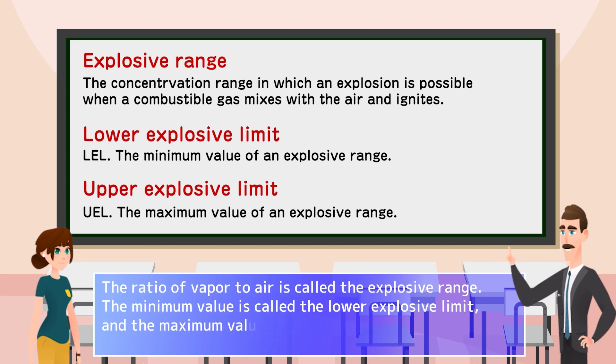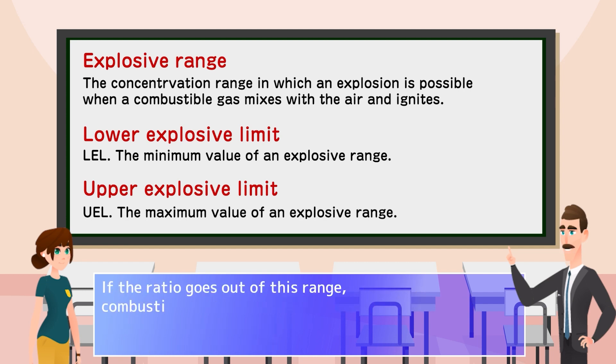The ratio of vapor to air is called the explosive range. The minimum value is called the lower explosive limit, and the maximum value is called the upper explosive limit. If the ratio goes out of this range, combustion will not occur.